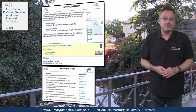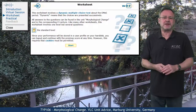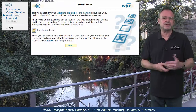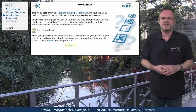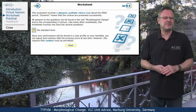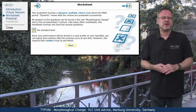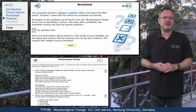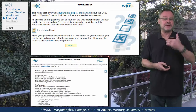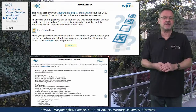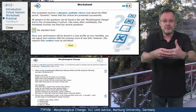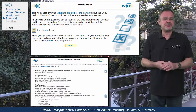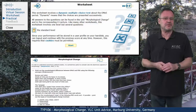This unit's mastery worksheet is a dynamic multiple choice test with questions about morphological change — should be easy after the virtual session. One of the practicals provides you with historical data to illustrate some of the changes that English underwent, and with new word forms to show the productivity of present-day English morphology.